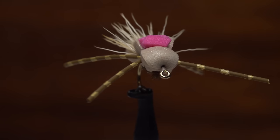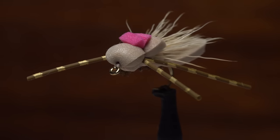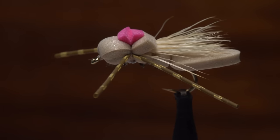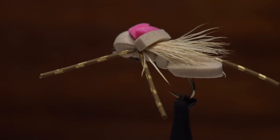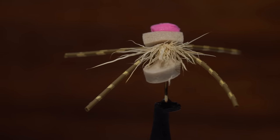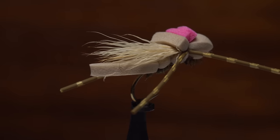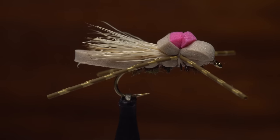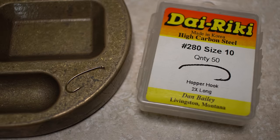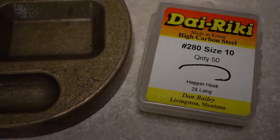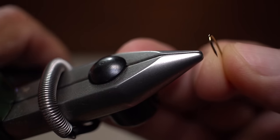This is Walter Wiese's GFA Hopper. GFA stands for General Foam Attractor. It's one of my favorite hopper-attractor indicator patterns because it's extremely easy to tie and just seems to do everything well. For a hook I'm going to use a Diechi number 280 in size 10, but you can tie the GFA from as small as a size 14 all the way up to a size 6.